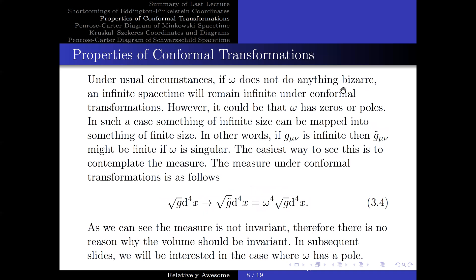Under usual circumstances, if Ω does not do anything bizarre, an infinite spacetime will remain infinite under conformal transformations. However, it could be that Ω has zeros or poles. In such a case, something of infinite size can be mapped into something of finite size. In other words, if g_μν is infinite, then g̃_μν might be finite if Ω is singular. The easiest way to see this is to contemplate the measure. As we can see, the measure is not invariant under conformal transformation. Therefore, there is no reason why the volume should be invariant. In subsequent slides, we won't be interested in the case where Ω has a pole.